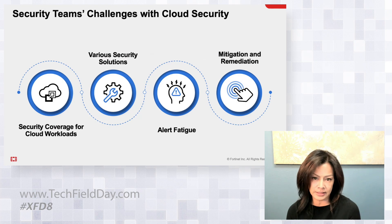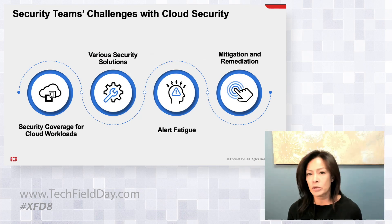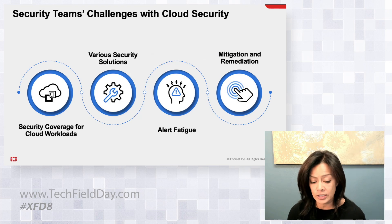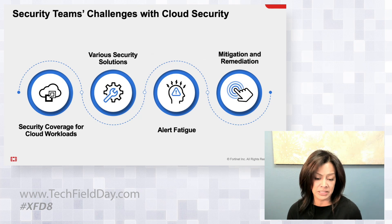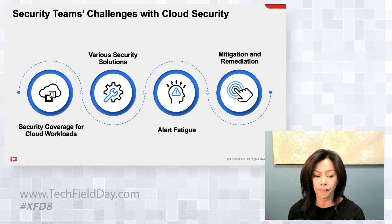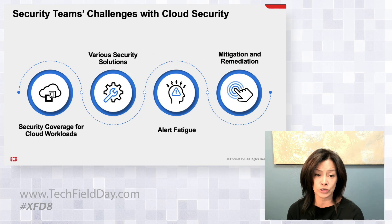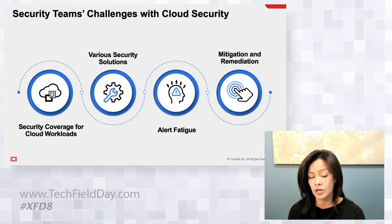Traditional security tools lack the capabilities to respond quickly to the dynamic changes of the cloud. Many security controls historically applied to on-premises don't map effectively to the cloud. With organizations leveraging multi-cloud strategies, security controls can differ across cloud environments. As new risks emerged, organizations added new solutions — usually from different vendors — each time a new risk appeared, to ensure sufficient security coverage. Over time, this has led to security tool sprawl, with many tools operating in silos and creating a fragmented security architecture.